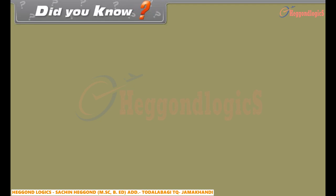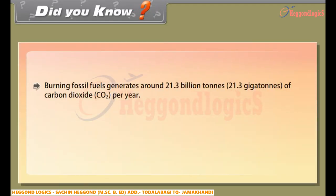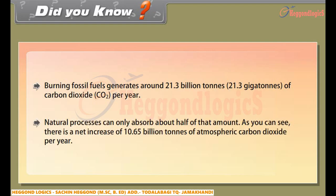Did you know? Burning fossil fuels generates around 21.3 billion tons (21.3 gigatons) of carbon dioxide (CO2) per year. Natural processes can only absorb about half of that amount. As you can see, there is a net increase of 10.65 billion tons of atmospheric carbon dioxide per year.